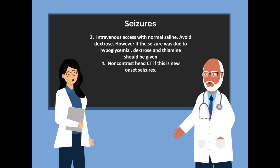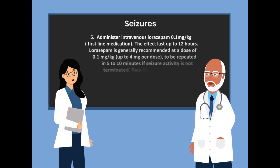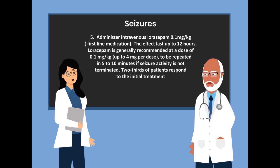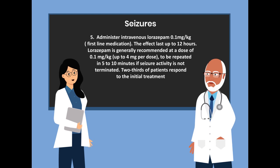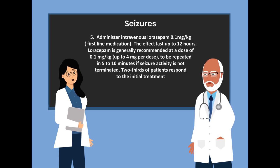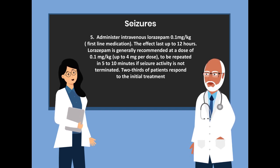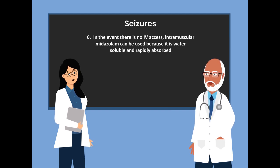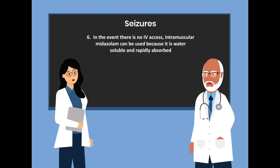Number 4: a non-contrast head CT is warranted if this is new onset seizures. Number 5: administer intravenous lorazepam — it is regarded as the first-line medication. The effect lasts up to 12 hours. Lorazepam is generally recommended at a dose of 0.1 mg per kg, may be administered up to 4 mg per dose, and may be repeated in 5 to 10 minutes if seizure activity is not terminated. Number 6: in the event there is no IV access, intramuscular midazolam can be used because it is water-soluble and rapidly absorbed.